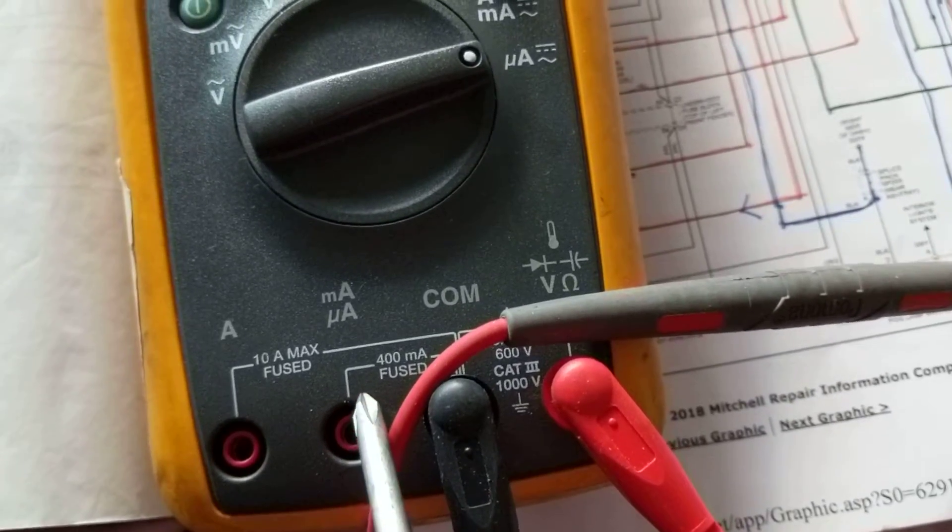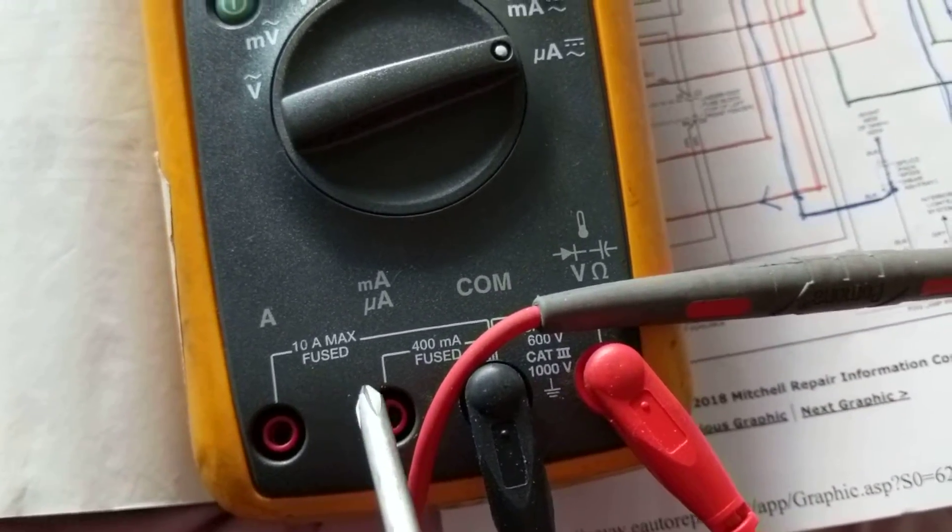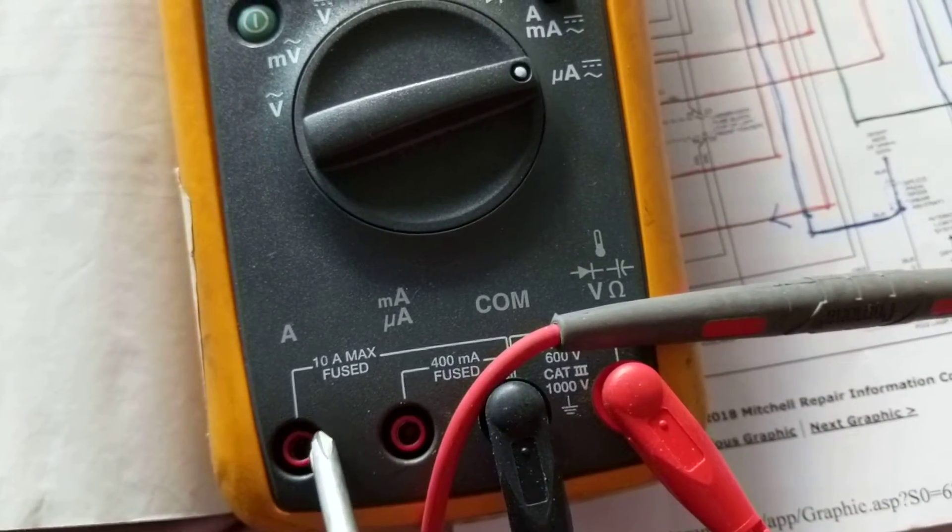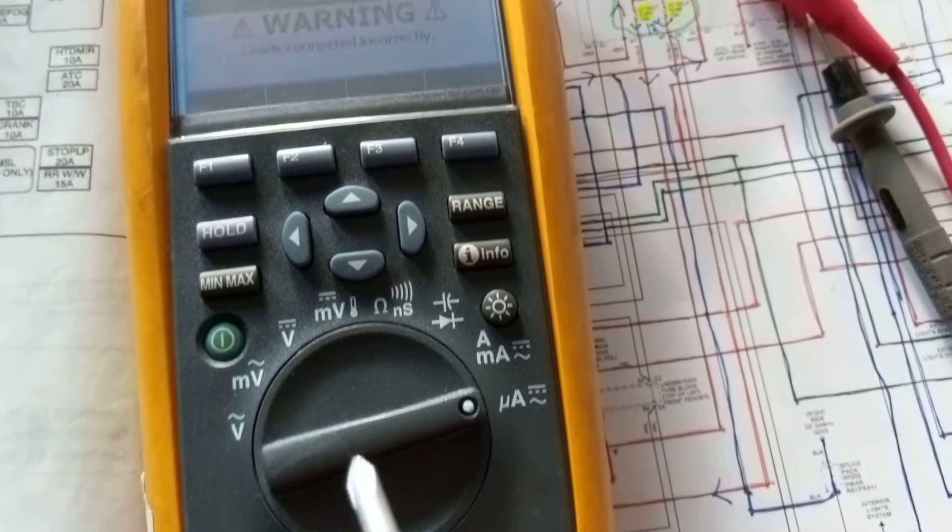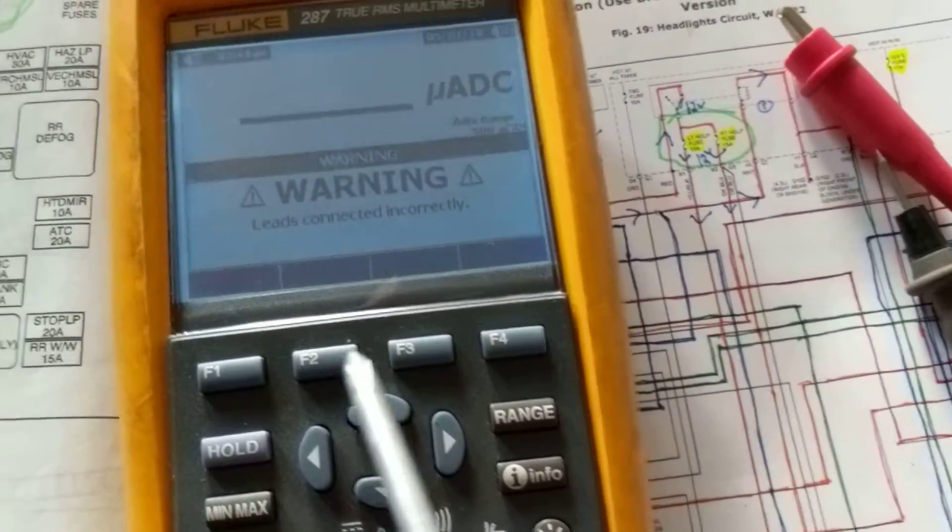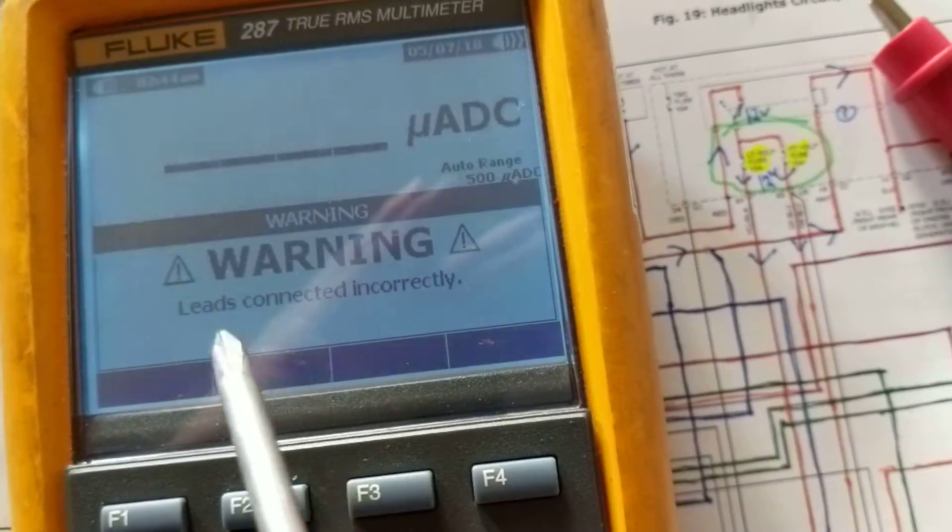If you want to measure higher than that, you would put it over here - 10 amps over here in this one. But at least it warns you that the leads are in the wrong position: connected incorrectly. So you don't blow out the fuse.